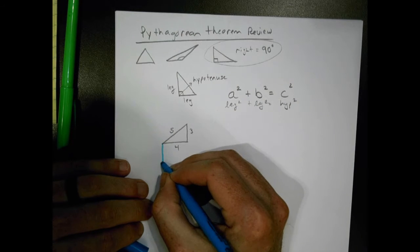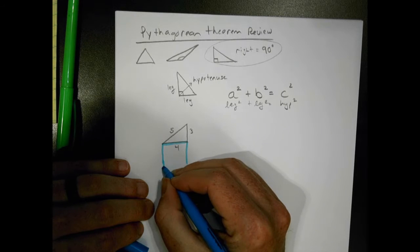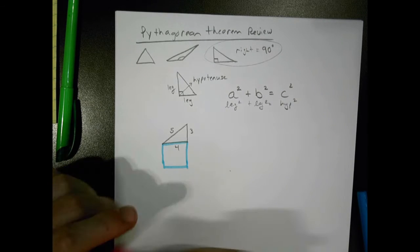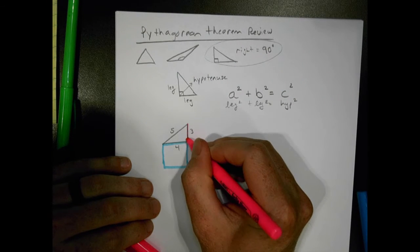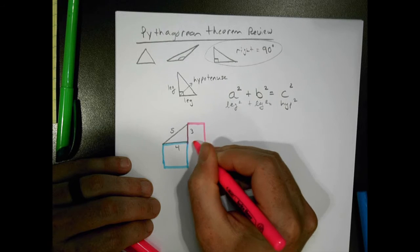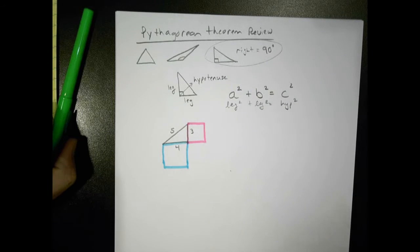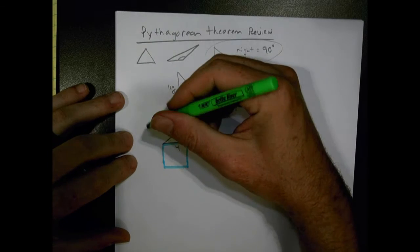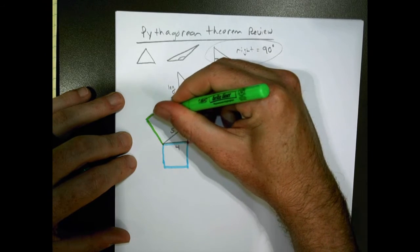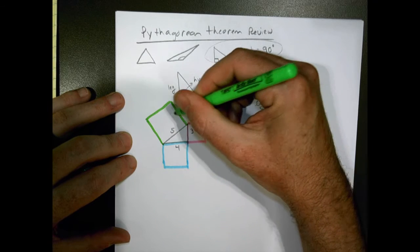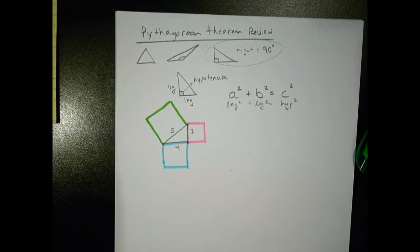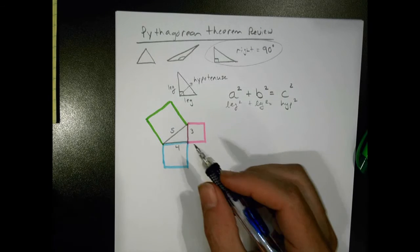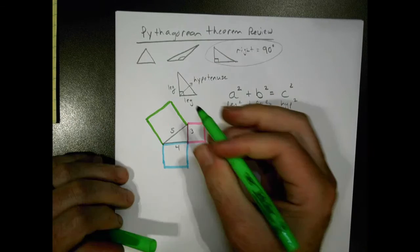The idea is that if I had a square with a length and width of four by four, and another square of three by three, and if I added those two squares together, the sum of those squares would equal the sum of this square over here. The pink square plus the blue square equals the green square. That's the idea of the Pythagorean Theorem.